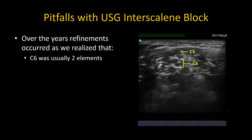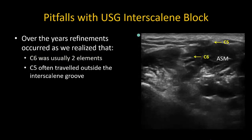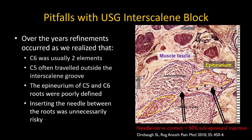The description of this technique was gradually refined as we realized that the C6 root often splits into two hypoechoic elements, that anatomical anomalies of the C5 root were quite common — with C5 traveling outside of the interscalene groove through or over the anterior scalene muscle — and that the epineurium of the C5 and C6 roots was thin and poorly defined. This increased the risk of inadvertent intraneural injection with needle insertion between the roots, especially as visualization is not always optimal. This led to the recommendation of an extrafascial injection rather than an intrafascial injection technique.